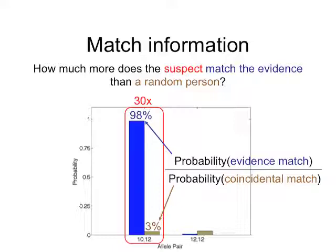Imagine you have 15 loci, each with a likelihood ratio — say, hypothetically, all around a value of 10. If you multiply 10 times 10, fifteen times, you get a quadrillion: a 1 followed by 15 zeros. Because when scientists measure information, they use the logarithm — we count the number of zeros. So instead of saying quadrillion, we say 15. Instead of saying a million, we say 6 — a 1 followed by 6 zeros. That way we can keep track of these numbers and explain them to people.